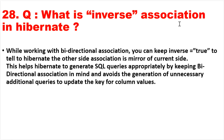The next question: what is inverse association in Hibernate? While working with bidirectional association, you can set inverse=true. Hibernate supports two types of associations: bidirectional and unidirectional. Setting inverse=true tells Hibernate that the other side of the association is the mirror of the current side. This helps Hibernate generate SQL queries appropriately and avoids generating unnecessary additional queries to update foreign key column values.